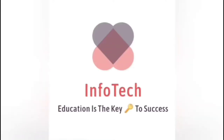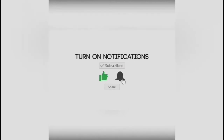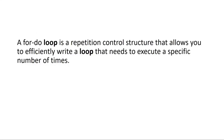Welcome back to another tutorial. For today's lesson we'll be looking at the for loop and also discussing cumulative total. The for loop is a repetition control structure that allows you to efficiently write a loop that needs to execute a specific number of times. This means we'll know the start value and most times we know the end value, so we basically know how many times this loop needs to be executed.